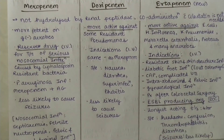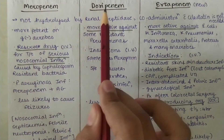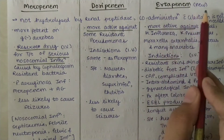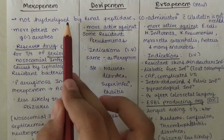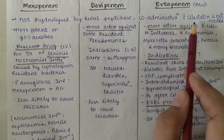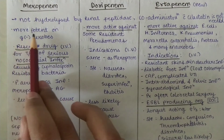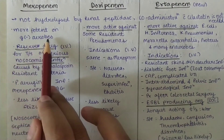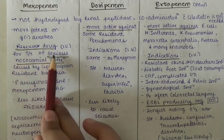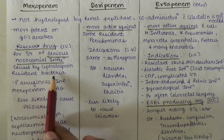Next, I have a table which differentiates Meropenem, Doripenem, and Ertapenem. Ertapenem is the newer one. They are all not hydrolyzed by renal peptidase and hence co-administration with Cilastatin is not needed. Meropenem is more potent against gram-negative aerobes and is a reserved drug for the treatment of serious nosocomial infections caused by cephalosporin-resistant bacteria.